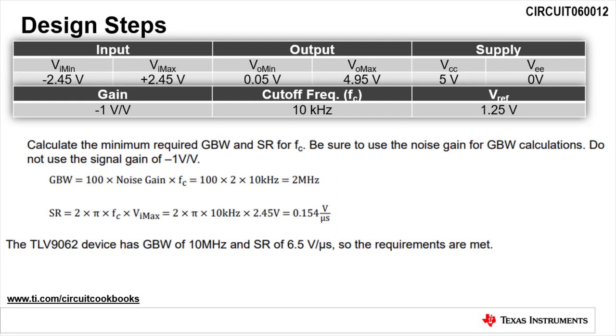The final step is to ensure that the selected device, TLV9062, has sufficient bandwidth and slew rate to meet the design requirements. It is important to use the noise gain for this calculation. The noise gain for this circuit is 2 volts per volt. Do not use the signal gain of negative 1 volt per volt.